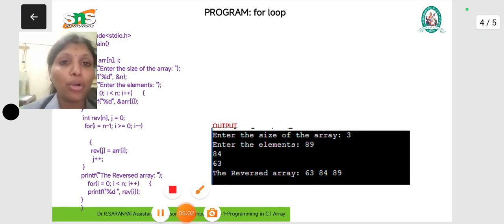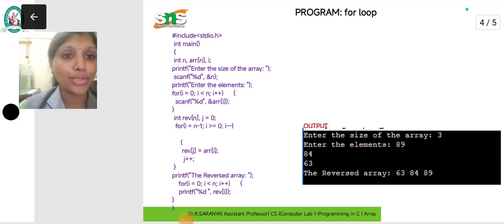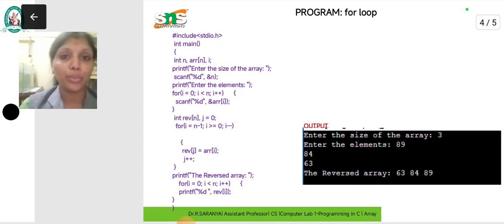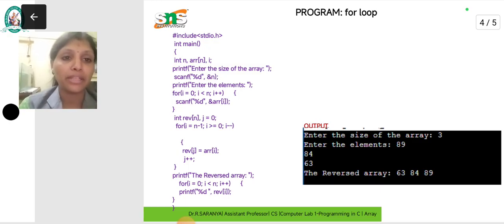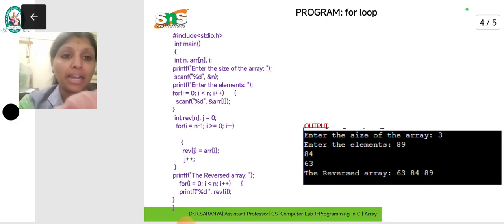In the for loop, i value is 0, i condition is n, that is the size of the condition, i++. When the condition is satisfied, that value is used to get the user value. If we get the user value, we can store it in the array variable. Scanf %d, that is the integer value. You have to store it in ampersand arr of i. So 0th value, 1st value, 2nd value, array value stored.